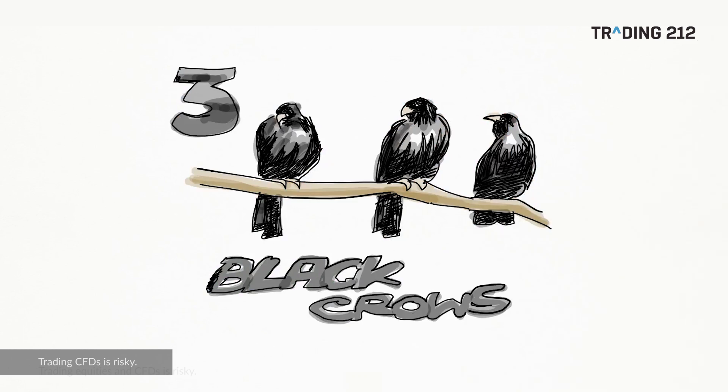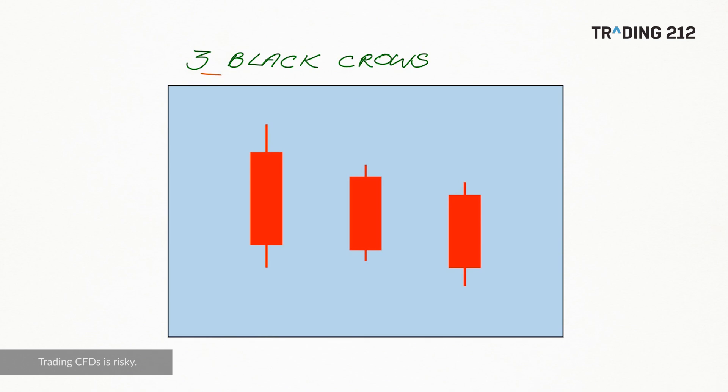Our second pattern is called three black crows. So three black crows: with this pattern you are looking for three declining red candles as we have shown here.